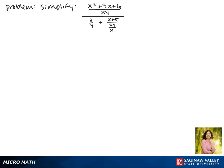Today we'll be simplifying x squared plus 5x plus 6 over xy divided by 3 over y plus x plus 5 over 2y over x.